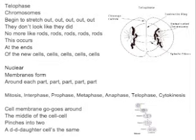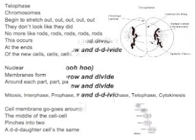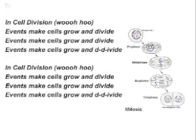Mitosis: interphase, prophase, metaphase, anaphase, telophase, cytokinesis. Cell membranes go around the middle of the cell. The cell branches into two identical daughter cells. The same cell division!